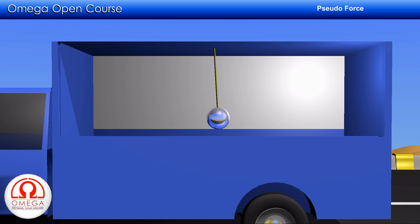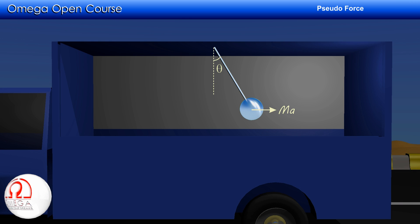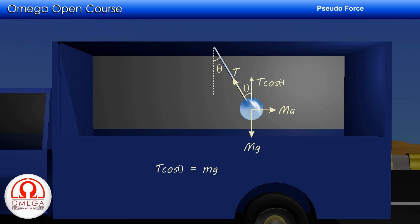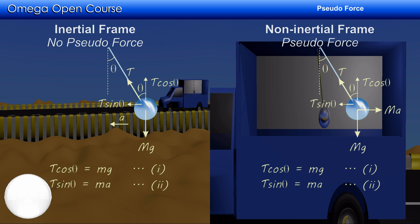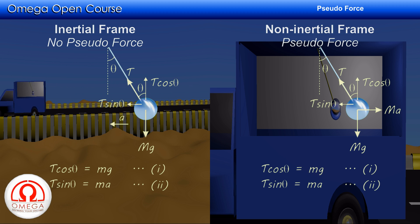Now looking at the system with respect to the truck: the bob appears to be at rest, so net force on it must be zero. Since the frame is accelerating, a pseudo-force of magnitude ma acts on the bob in the opposite direction. Gravity and tension remain the same. Setting net force to zero: T cos theta equals mg and T sin theta equals ma — the same equations as before. Whether we use an inertial or non-inertial frame, the equations obtained are essentially identical.